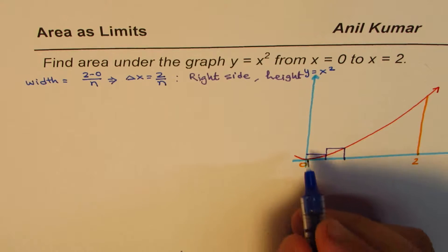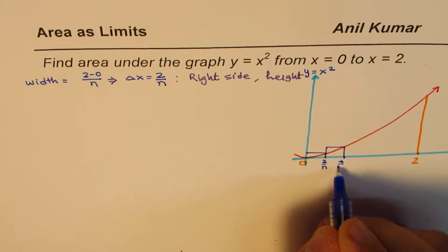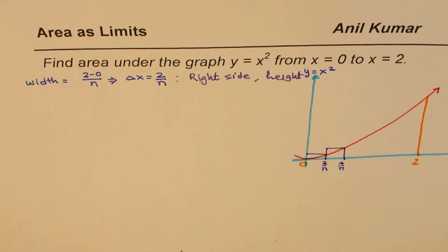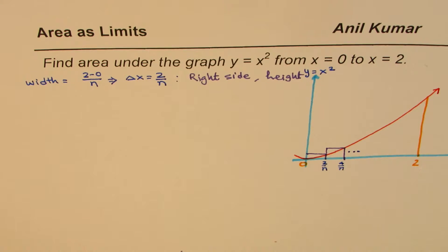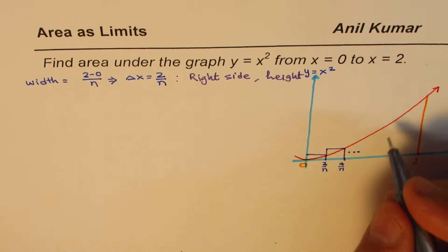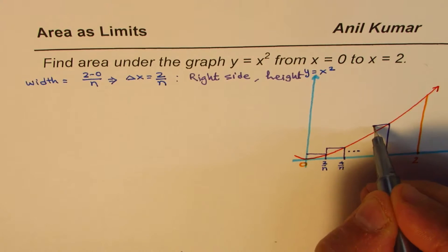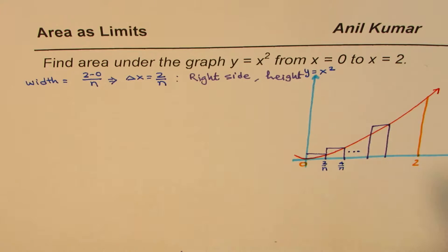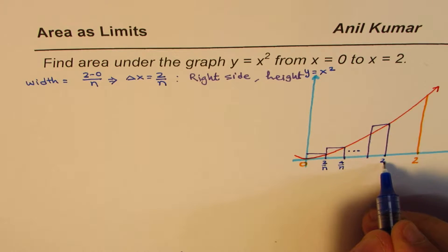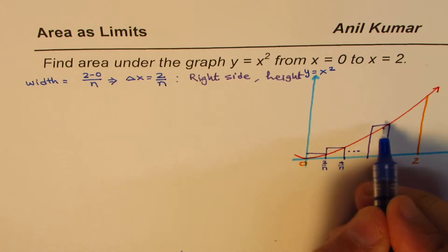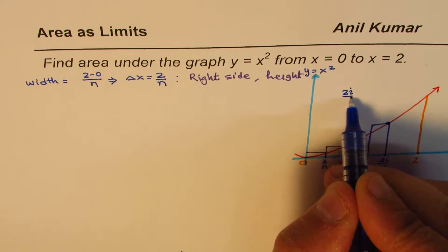Since each rectangle has width 2/n, they are positioned at 2/n, 4/n, 6/n, and so on. Let us take a general one somewhere in between and call it the ith rectangle. The x-coordinate for the ith rectangle will be 2i/n.